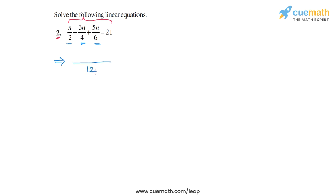Let's take the LCM, and now corresponding to this n, we will have 6n. For this 3n, we will have 3n times 3, so we will get minus 9n. And then for this 5n, we will have 5n times 2, so this will be plus 10n.